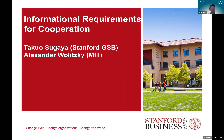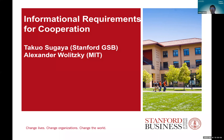Thank you for the invitation. I will talk about the information requirements for cooperation. This is joint work with Alex Wojcicki—I think he's here. One announcement: I circulated the paper, and the circulated paper was about the limit where the number of players goes to infinity or becomes very large, and asks what is the information requirement for cooperation. We reorganized the paper so that we can also look at other comparative statics about the parameters of the stage game.